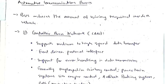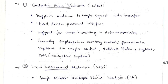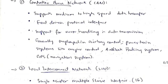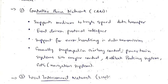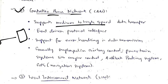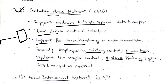Since there are many embedded systems in a car, they communicate via a bus. There are three types of bus. For communication between important embedded systems, the Controller Area Network (CAN) is used — it supports medium to high speed, is event-driven, has error-handling support, and is used for powertrain systems, anti-lock braking systems, and airbags.